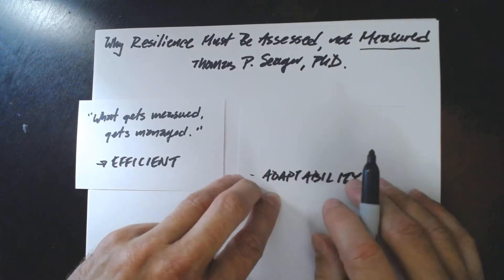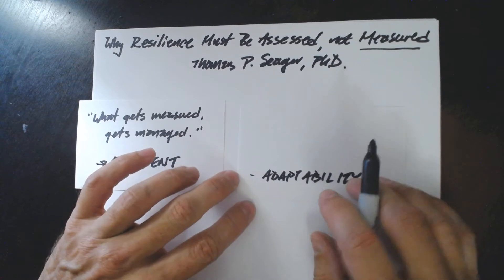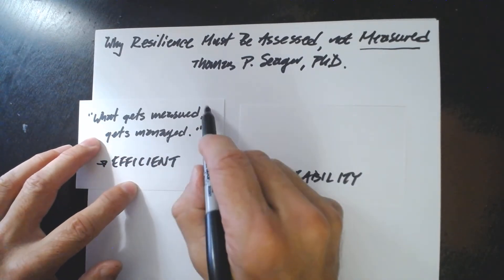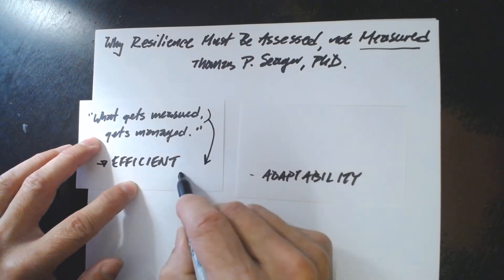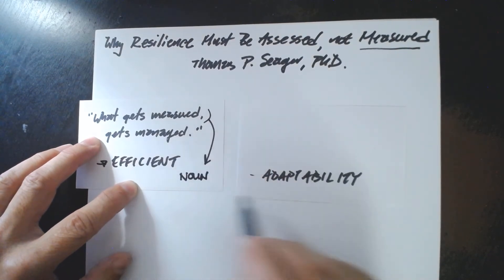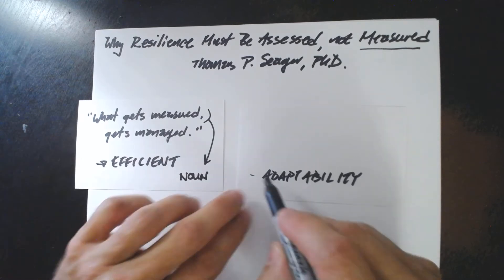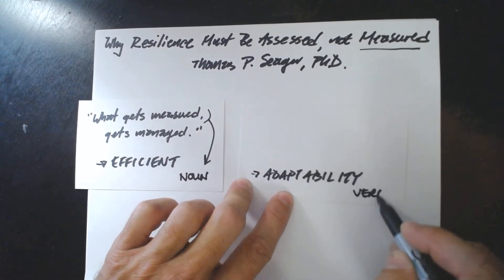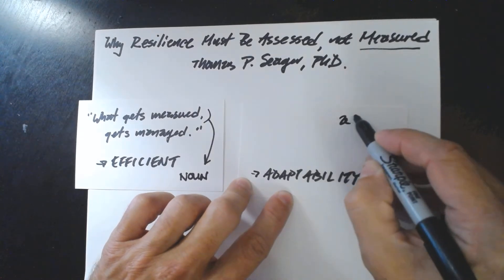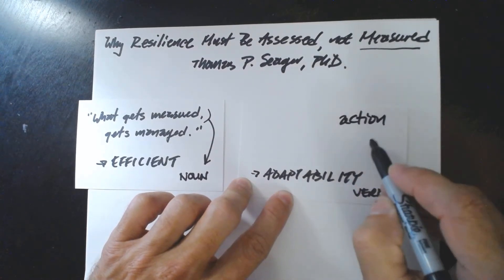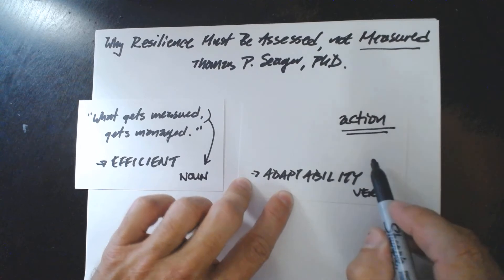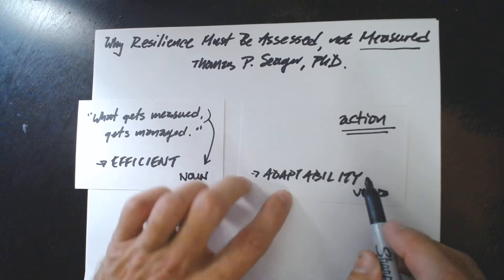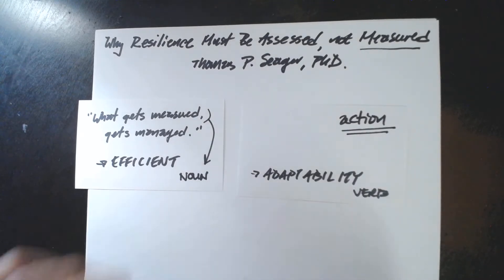Whereas it's efficiency that makes us rich. It is adaptability that keeps us alive. And how do we know what our adaptability is? The only way to know is to test it. Because measurement happens on the spreadsheet when we're working with nouns. Adaptability happens in action when we're working with verbs.